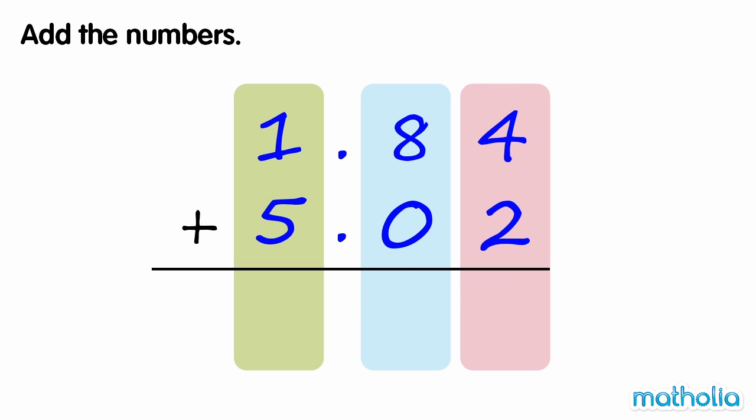Add the numbers. We need to find 1.84 plus 5.02. First, we add the hundredths. 4 hundredths plus 2 hundredths equals 6 hundredths.